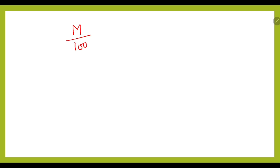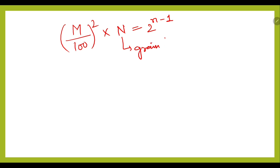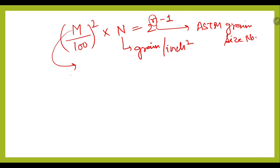We can also express this formula as: (M/100)² × N = 2^(n-1), where N refers to grains per square inch, small n is the ASTM grain size number, and M is the magnification at which we are measuring the grain per square inch — this is the magnification function.